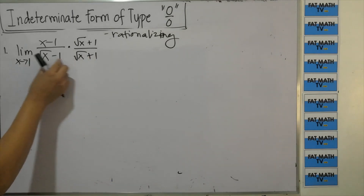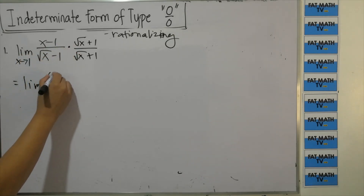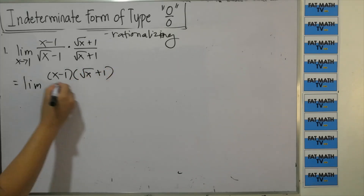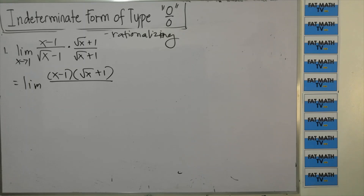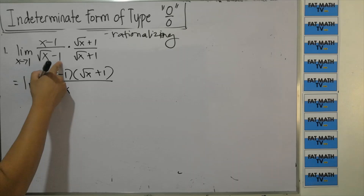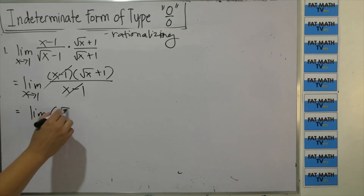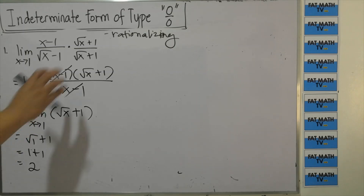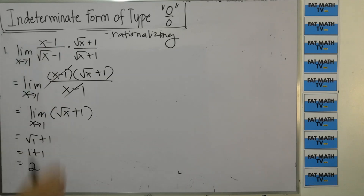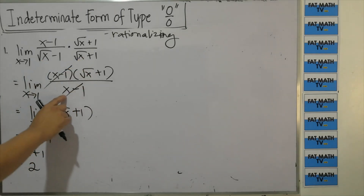Multiplying (square root of x minus 1)(square root of x plus 1) gives a difference of squares: x minus 1. So we have the limit of (x minus 1)(square root of x plus 1) over x minus 1. Cancel (x minus 1), leaving the limit of square root of x plus 1 as x approaches 1. Substituting gives square root of 1 plus 1, which is 1 plus 1, equaling 2. When rationalizing, if the expression is minus, multiply by the plus conjugate to get the difference of squares.